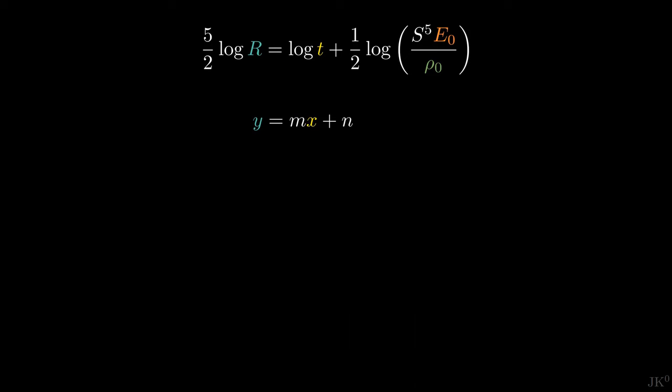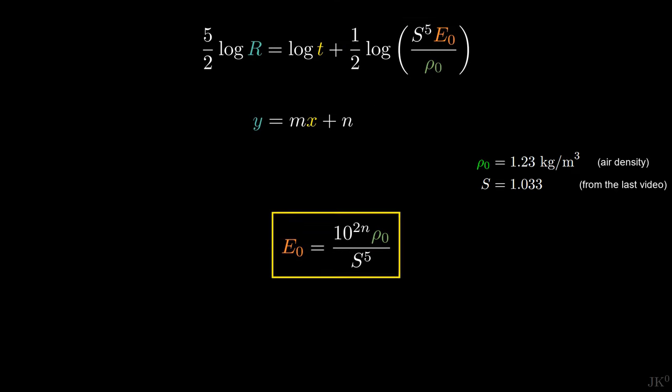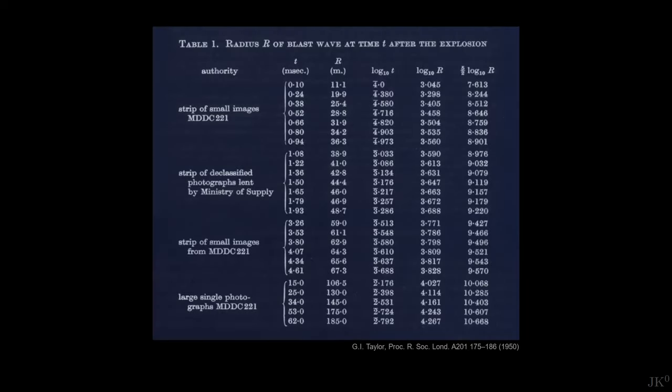As an added bonus, the crucial observation is that the intercept n only depends on the blast energy E0, which can be inverted to write E0 in terms of n, ρ0 and S. Since the constant S and the air density ρ0 are known, the blast energy can be found from the intercept n. In his paper,